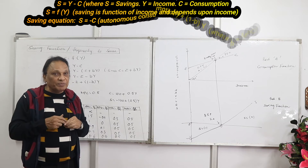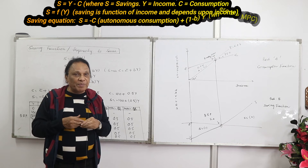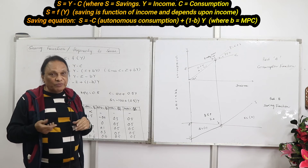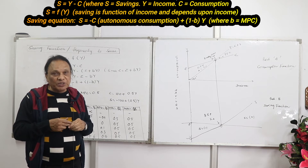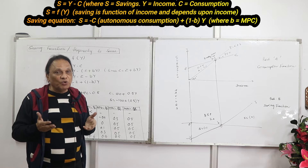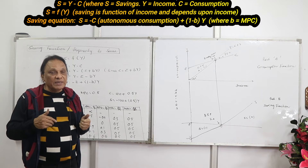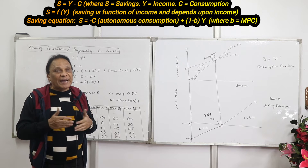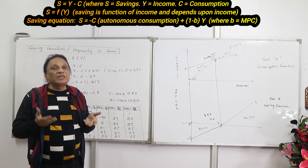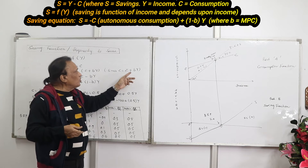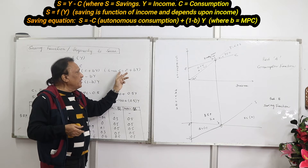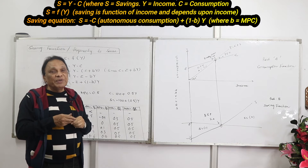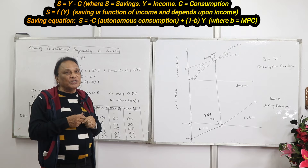Keep concentrating on these small concepts because they are likely to come as one-mark questions. For example, they can ask: what is C̄? You just write one sentence — C̄ is autonomous consumption, which is nothing but consumption at zero level of income. C̄ can never be zero; it is always a positive value. There has to be some consumption in the economy even if income is zero. And b in C = C̄ + bY stands for MPC, marginal propensity to consume.